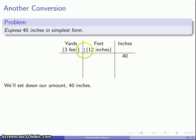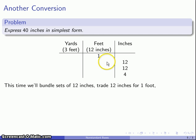And we'll split off this time sets of 12. So we'll bundle a set of 12 and another and another. And we'll trade. 12 inches gives us 1 foot, 12 inches gives us 1 foot, 12 inches gives us 1 foot. And there we have our feet. We'll combine them.